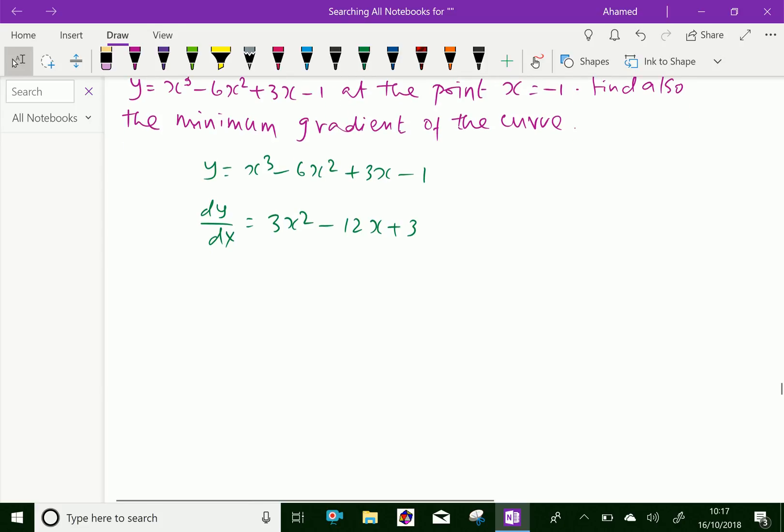Now, we will find the gradient at x = -1. That is, we will find dy/dx at x = -1 = 3(-1)² - 12(-1) + 3, which gives 18.